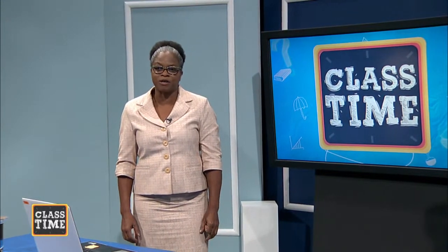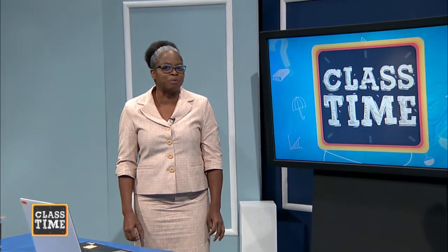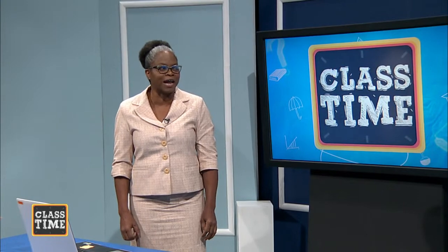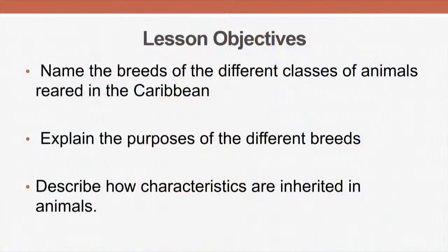These are the objectives we'd like to achieve today. One, at the end of the lesson, students should be able to name the breeds of different classes of animals reared in the Caribbean. Two, explain the purposes of the different breeds. And three, describe how characteristics are inherited in animals.